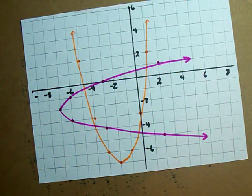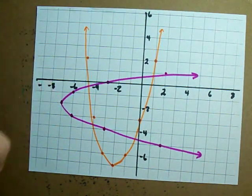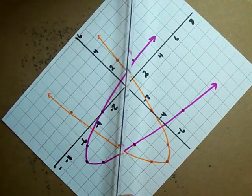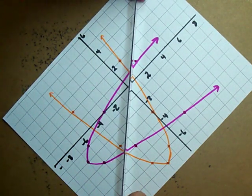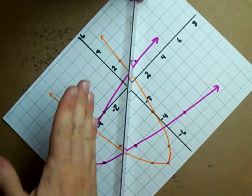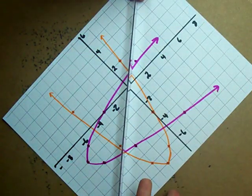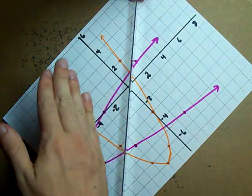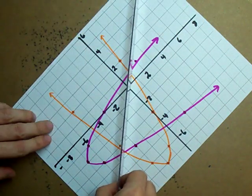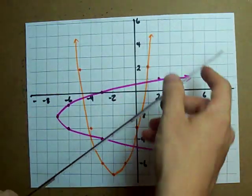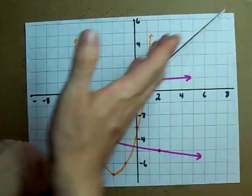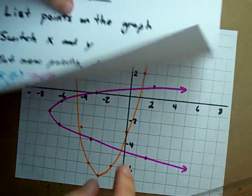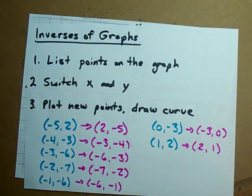Do you notice anything special about it? One way to check that you've drawn the correct inverse is to turn your page 45 degrees. A straight line down the middle should be a line of symmetry. As you can see, the left side and the right side are exactly the same, except for the color, because I drew them in different colors. You can tell that I've drawn the correct inverse because there's a mirror right down the center. If you don't want to turn your page, just put your mirror like that — it's the same on the top as on the bottom. And that is your three-step process to draw the inverse of any graph.